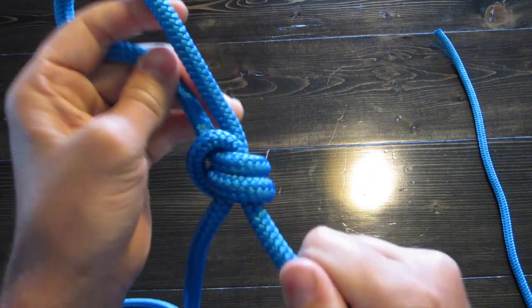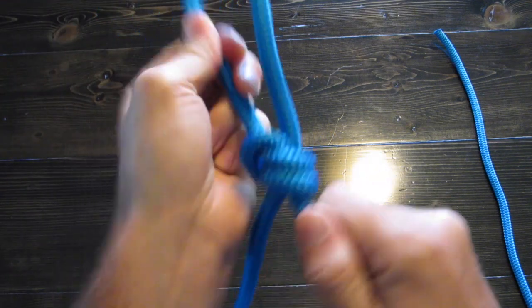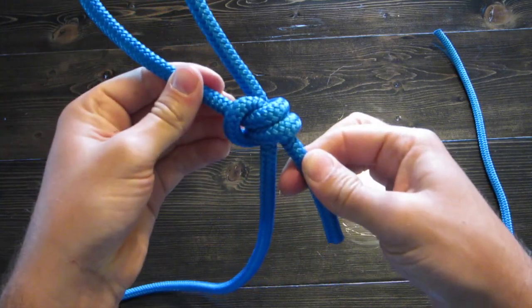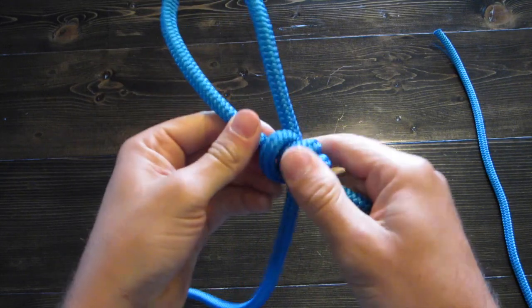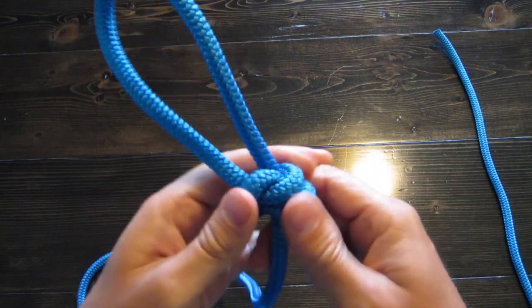And that's your double fisherman's loop. And you dress it by pulling these two ends of your knot tight and just make sure that it's dressed good. This is an easy knot to tie. It's hard to screw up once you got it.